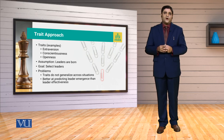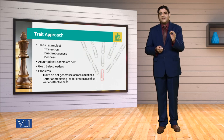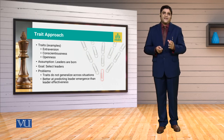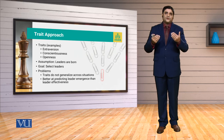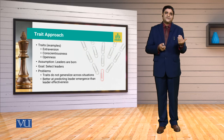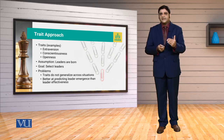And the second problem related to this trait theory was that it is better at predicting leader emergence than leader effectiveness. Ek leader jab develop karta hai, to development ke liye kin khasosiyyat aur traits ki zaroorat hai — yeh toh humne decide kar liya traits ke tahat. Lekin hum yeh decide nahi kar pate ke leader ki effectiveness kya har situation mein aur har organizational setup mein utni hi miqdar mein mojood hogi ya nahi. So effectiveness ka talluq traits ke sath appropriately establish nahi ho saka.